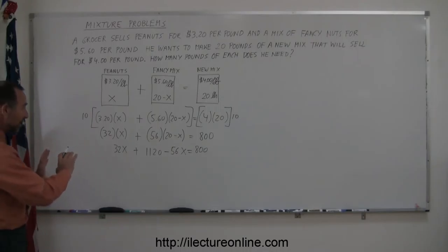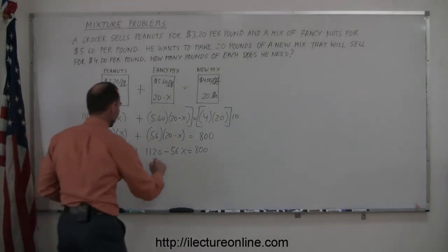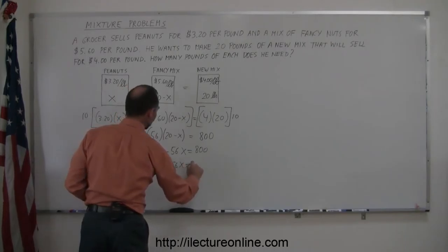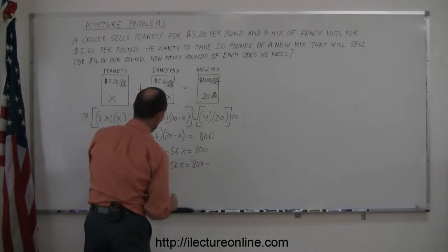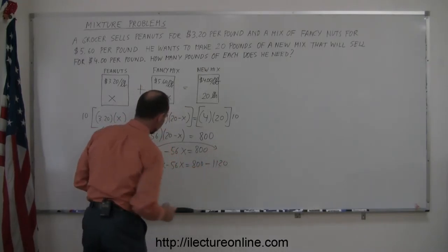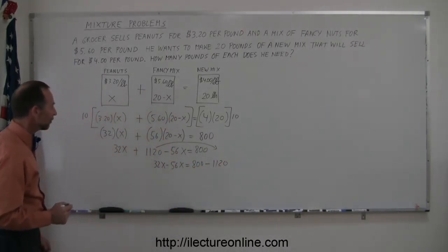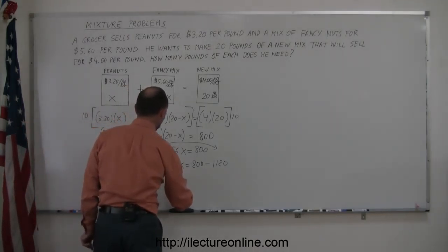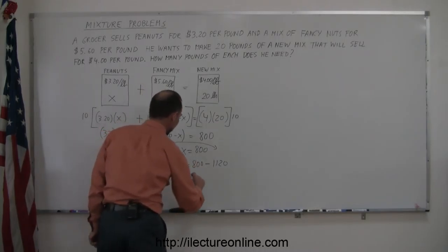Let's move all X's to one side, all the numbers to the other side. So we have 32X minus 56X equals 800 minus, when we bring the 1,120 across, that becomes a minus 1,120.